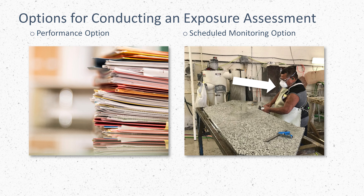Depending on the results, if silica is measured below all OSHA limits, no further testing is required. If the results are between the action level and the permissible exposure limit, the company will need to retest every six months. And if the results are above the permissible exposure limit, the company has to perform silica sampling every three months. Let's take a look at what silica sampling looks like, and then we will look at some objective data that could be used for the performance option.